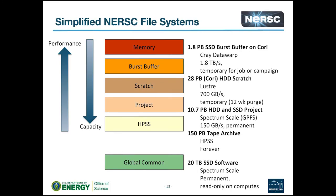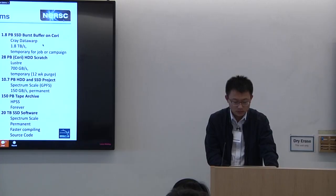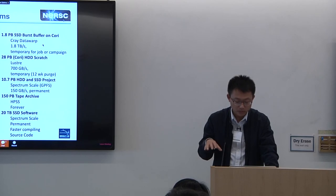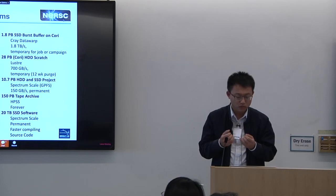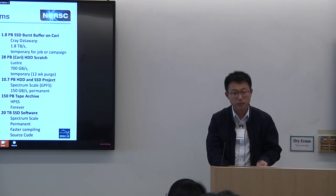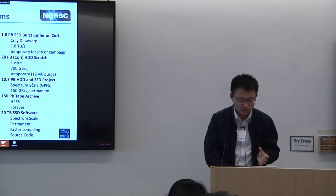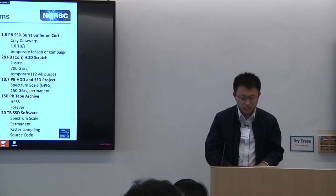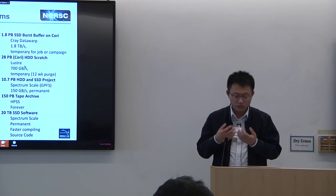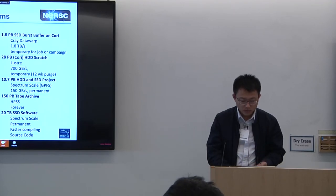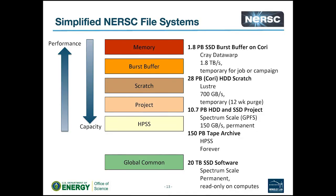To summarize what we've covered: there are different file systems — burst buffer, scratch, project, HPSS, global common, and global home. They are really designed for different purposes. You should understand what you are going to do. If you want to archive data, go to HPSS. If you want to share data with your group long-term, use project. If you are running jobs with IO, scratch and burst buffer are the best places.